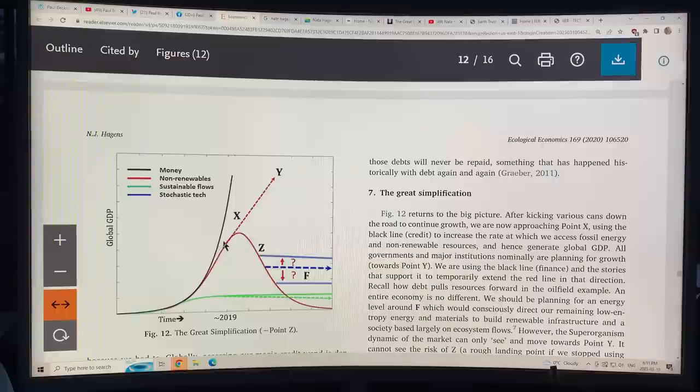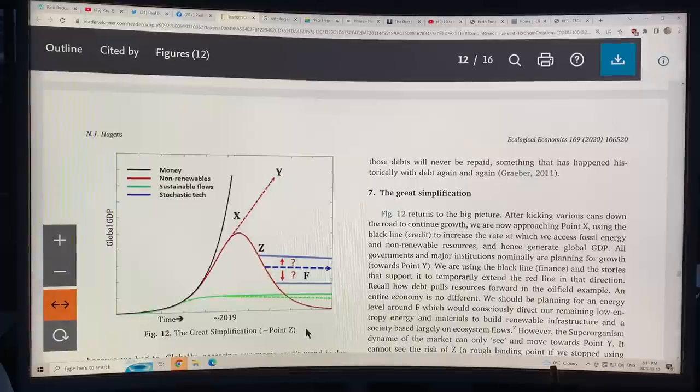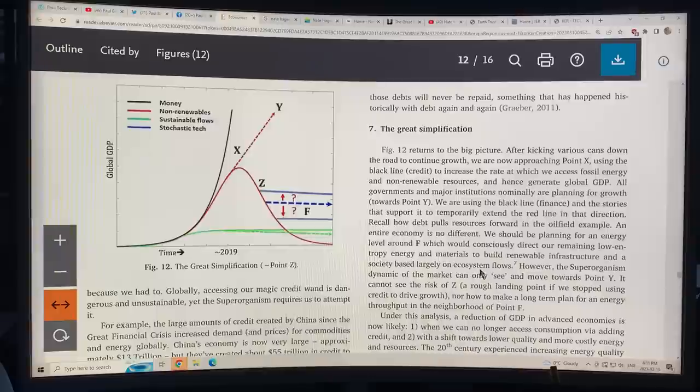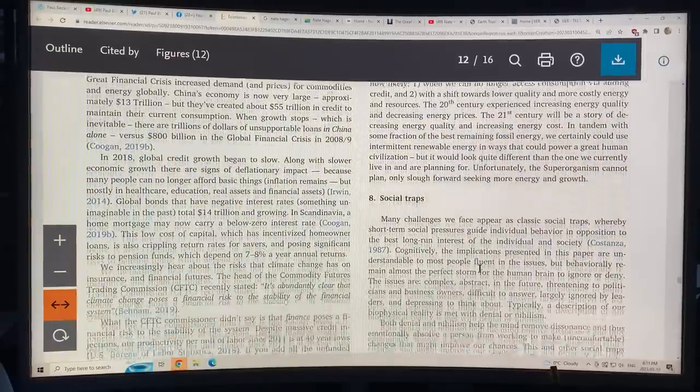So here's where we're heading. This is the non-renewable resources. This is the money, the credit. This is, we're at X and we're trying to reach Y, but instead we're going to plummet over to Z and back even down. This is a great simplification. It has to happen based on energy. It's unavoidable, right? Unless maybe if we just went completely nuclear and had nuclear plants everywhere, we could prolong it. But our biosphere is collapsing.